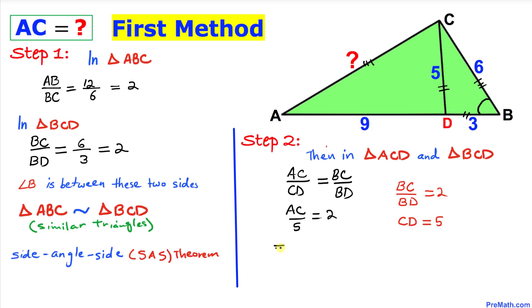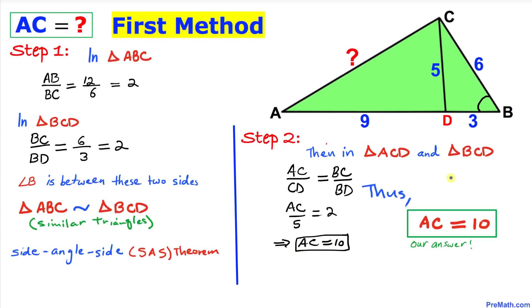That tells us that AC equals simply 10. So our side length AC turns out to be 10, and that is our answer.